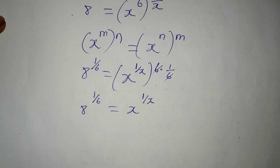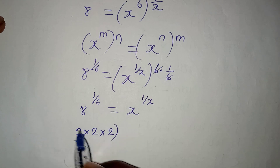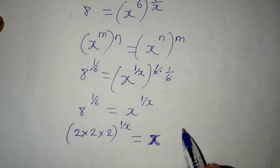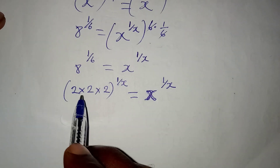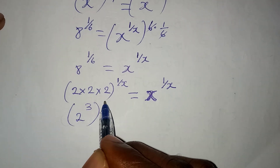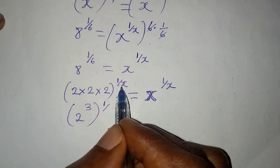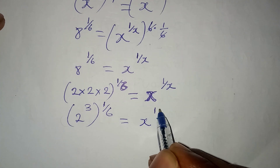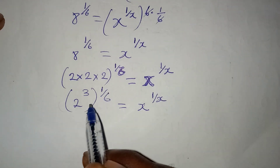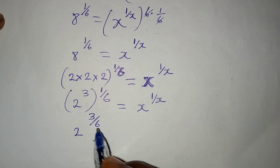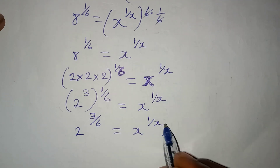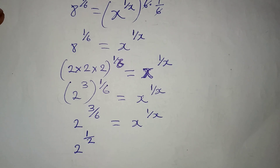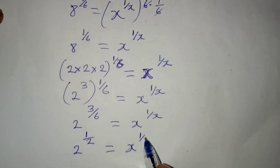Now let's take another step. Remember 8 is the same as 2 times 2 times 2, which is 2 to the power of 3 in index form, and this is to the power of 1 over 6, equal to x to the power of 1 over x. We can multiply to have 2 to the power of 3 over 6, which equals x to the power of 1 over x. Now 3 over 6 in its lowest term gives us 1 over 2, so we have 2 to the power of 1 over 2 equal to x to the power of 1 over x.